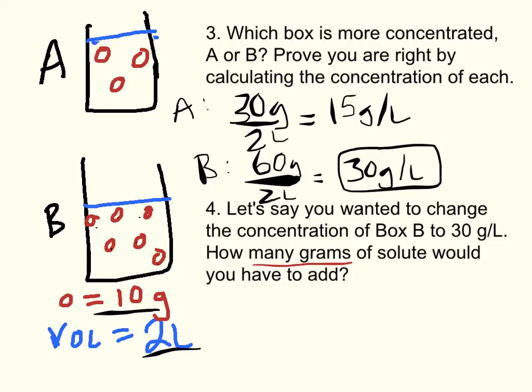You want to figure out how many grams. You want the concentration to be 30 grams per liter. You know the volume is 2 liters. The concentration is 30. So we do volume 2 liters times 30 grams per liter equals 60 grams.